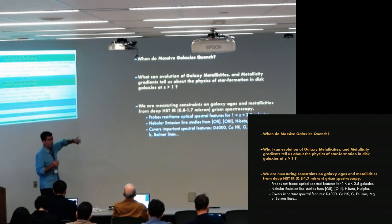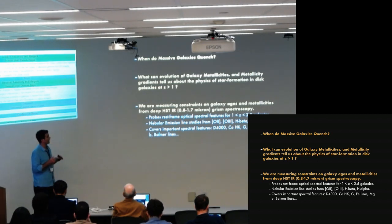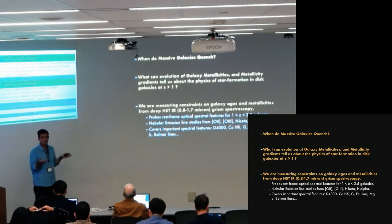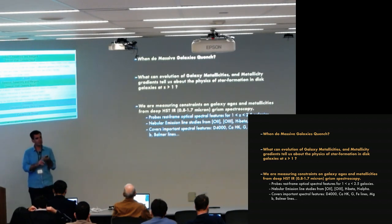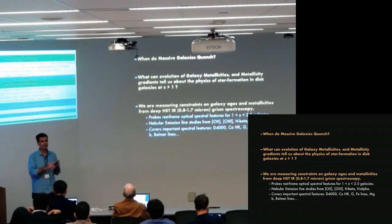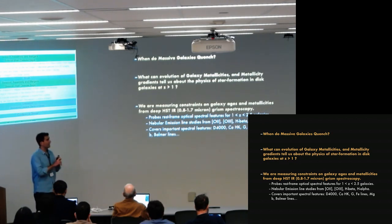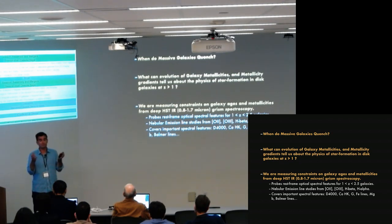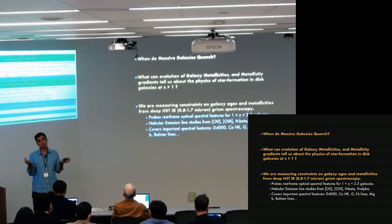The other question — split into two parts — is what can we learn by studying galaxy metallicities, both in the gas phase and, if we have time, in their stellar populations as well? And what does this tell us about the physics of star formation going on in star-forming disk galaxies at redshift one or greater than one, right around this period of the peak in the cosmic star formation rate density?